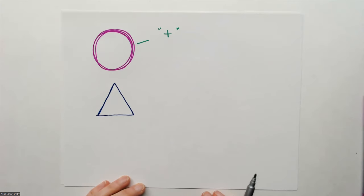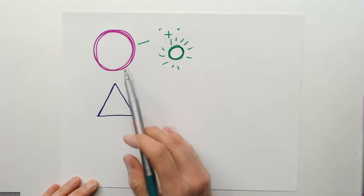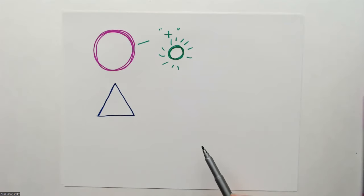This circle, we have a positive association with the circle. For example, the sun, that was probably the first one because it gives light, warms. Physically, it can't hurt us. It's round, no sharpness.